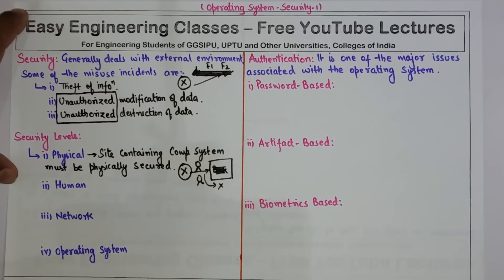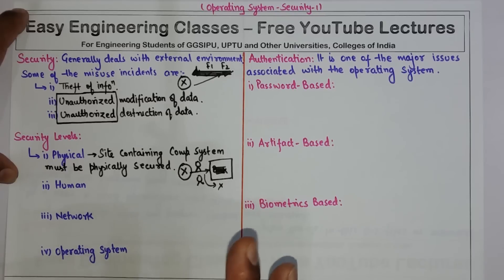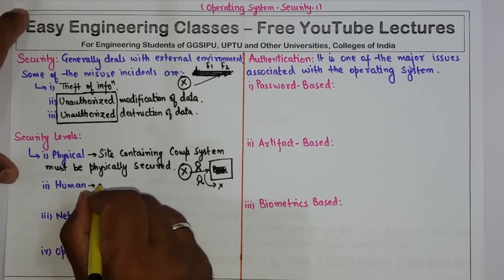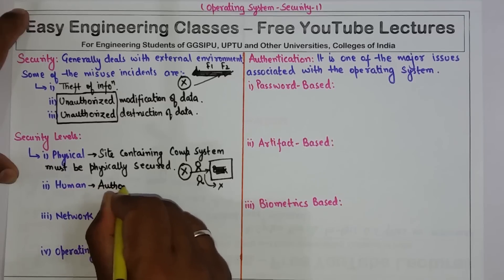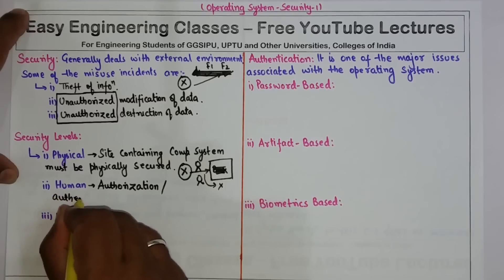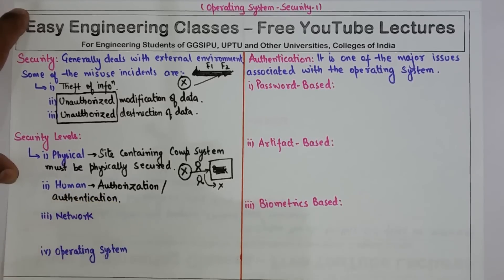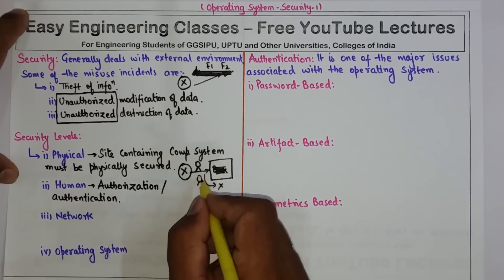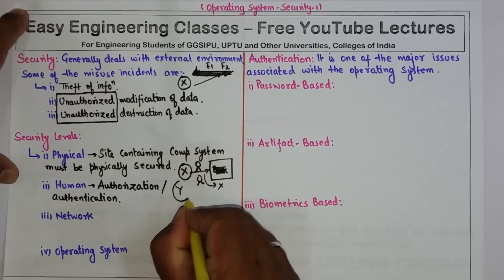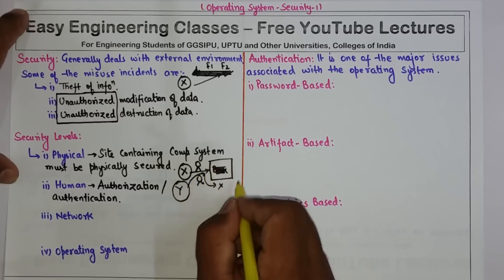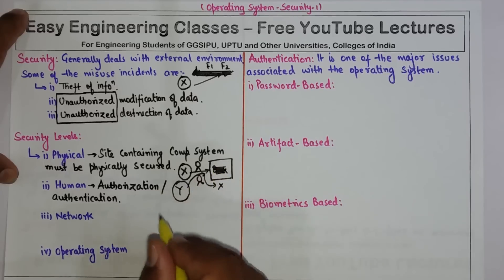The next level is human. Even permitted users should be carefully screened so that the chance of authorizing a user who may give access to an intruder is reduced. We should have authorization or authentication mechanisms implemented so that a normal user can be distinguished from an intruder. For example, if a user enters a bank and tries to access the mainframe of the software installed there, that should be stopped.